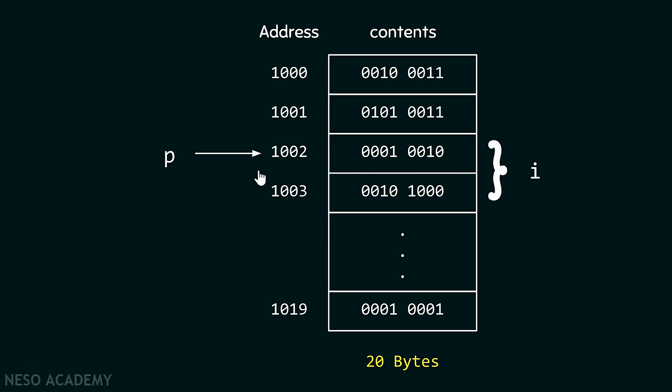Pointing to means it will simply store the base address or the initial address of the object. In this case, it is variable i.